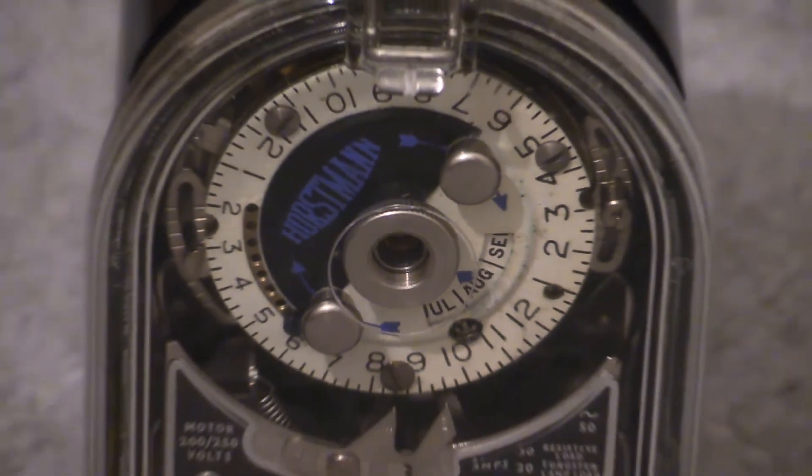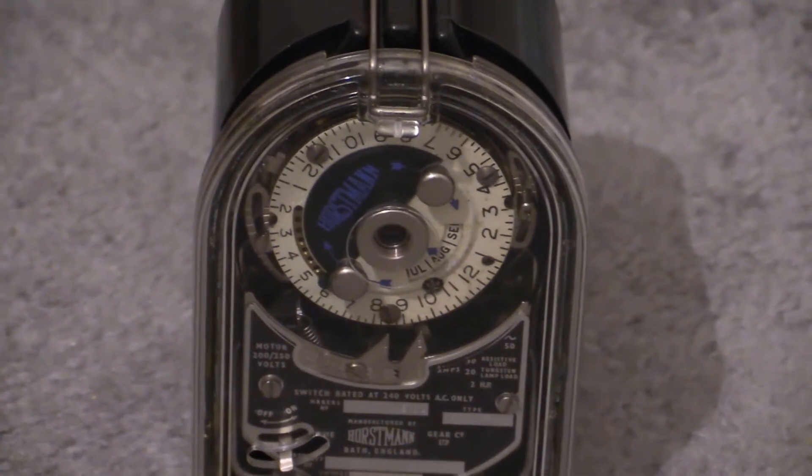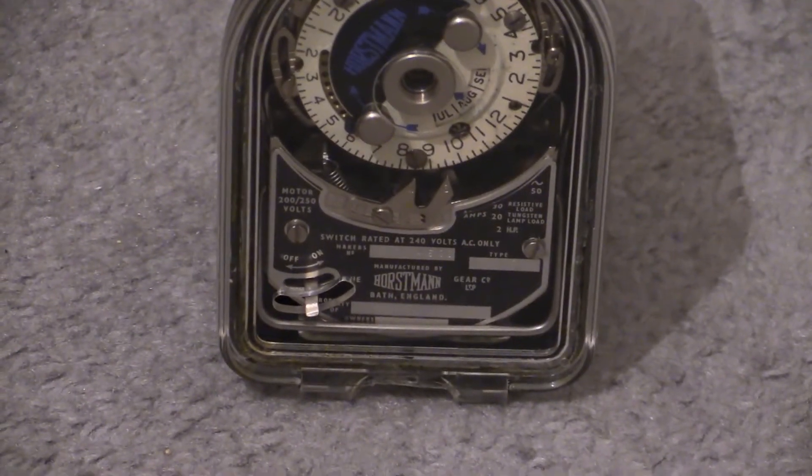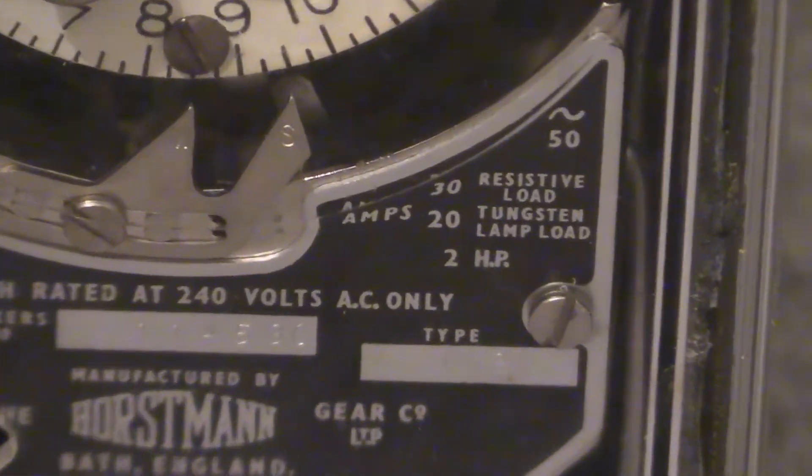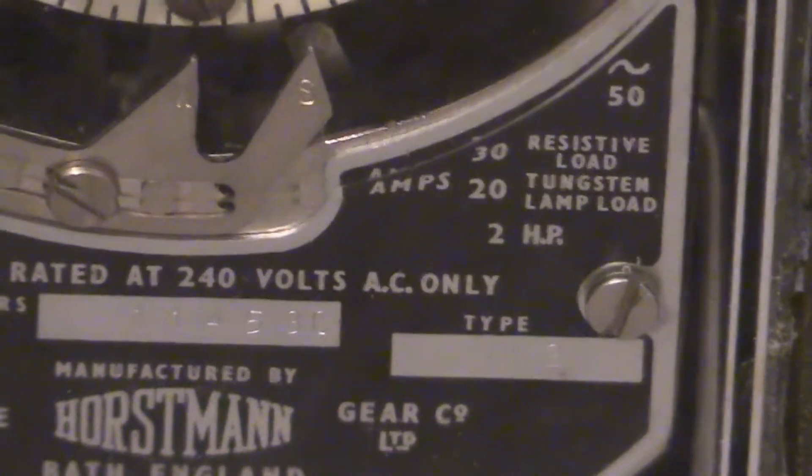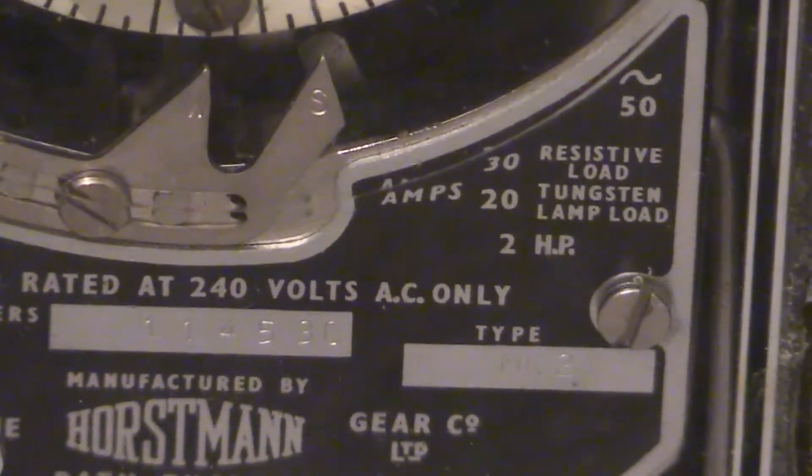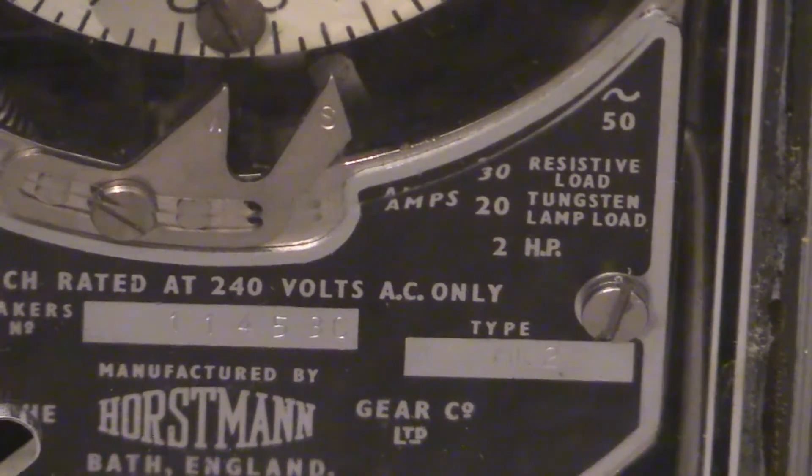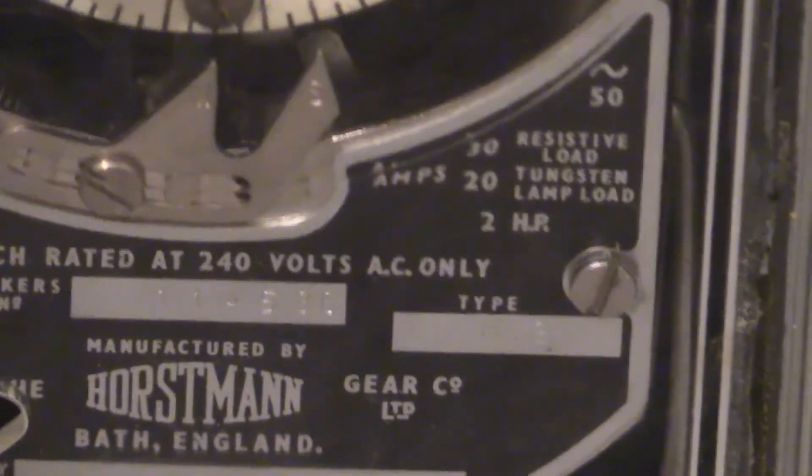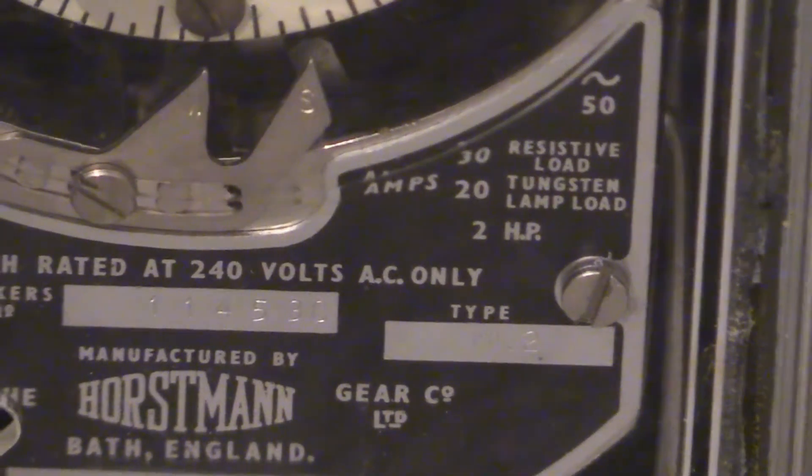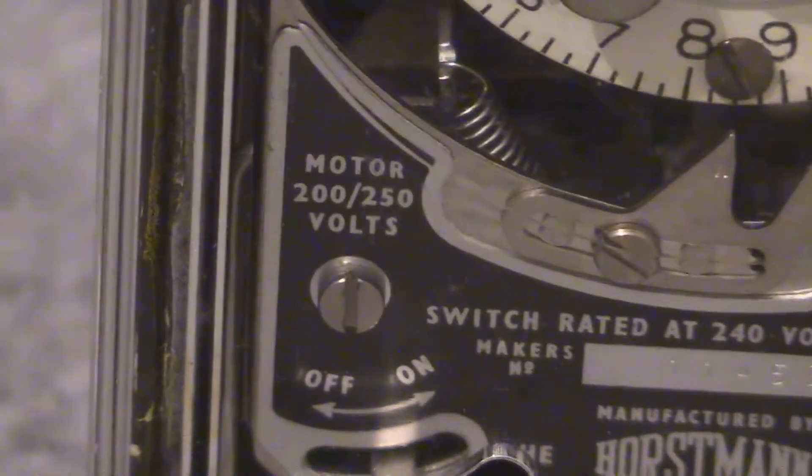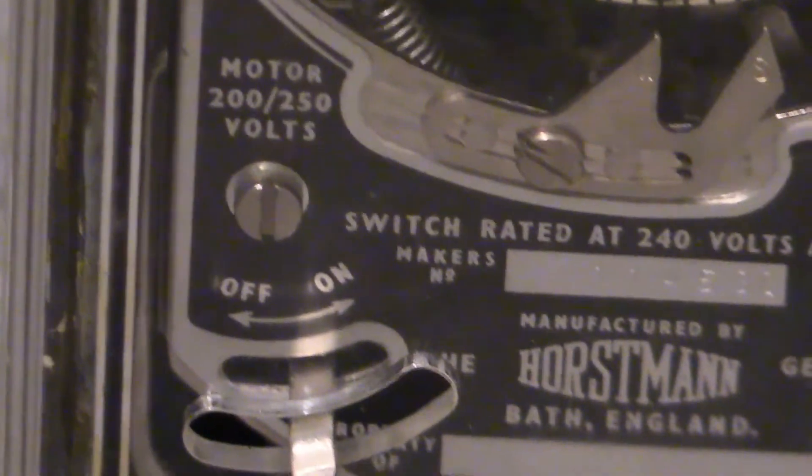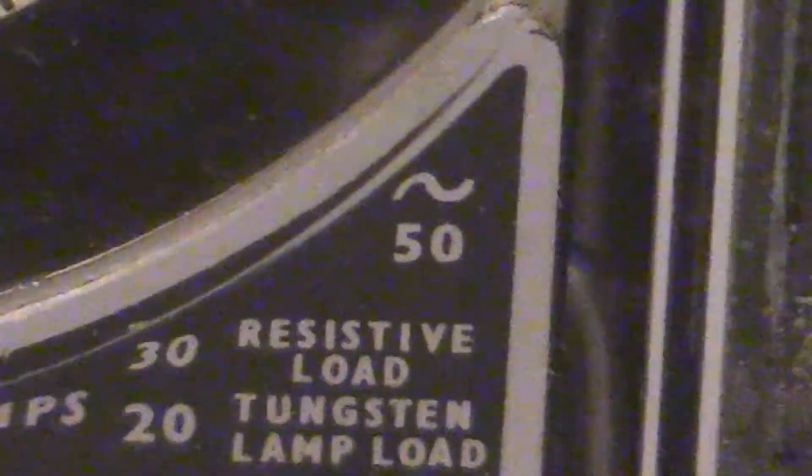Let's zoom in on the specification plate there and have a look at the characteristics for this one. This is a little basic model, and on the specifications it does make reference to resistive loads and lighting loads. Resistive load is 30 amps and tungsten lamp load is 30 amps, 240 volts for this, and the all-important 50 Hertz alternation frequency for the synchro motor. It says motor 200 to 250 volts, and I'm trying to see where on that specification plate it makes reference to 50 Hertz alternation frequency, and it is right there in that corner.